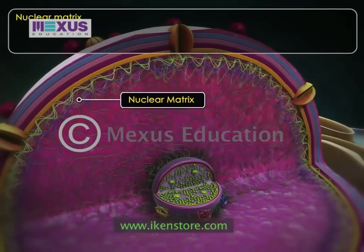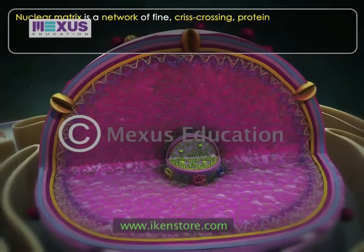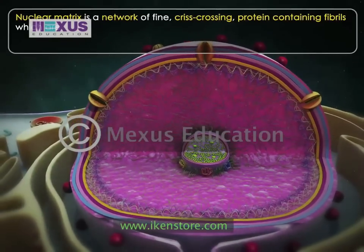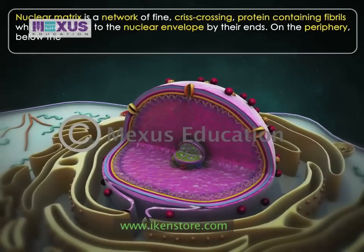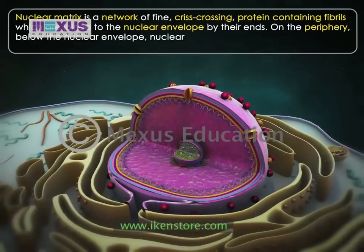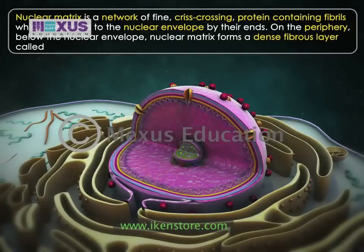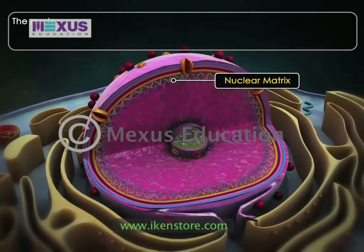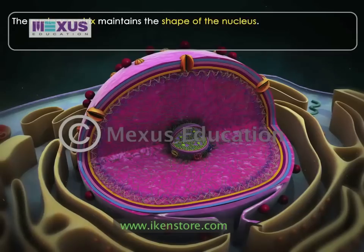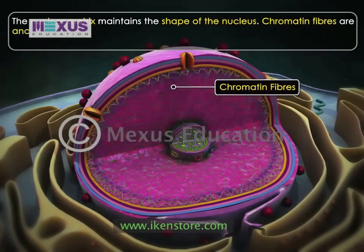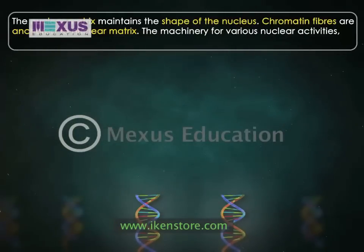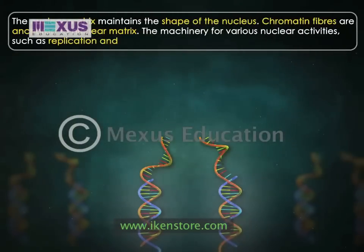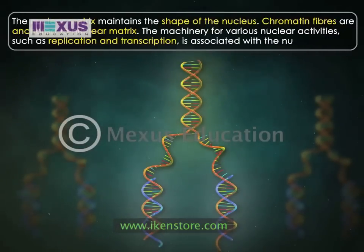The nuclear matrix is a network of fine crisscrossing protein-containing fibers which are joined to the nuclear envelope by their ends. On the periphery, below the nuclear envelope, the nuclear matrix forms a dense fibrous layer called the nuclear lamina. The nuclear matrix maintains the shape of the nucleus, and the chromatin fibers are anchored to it. The machinery for various nuclear activities such as replication and transcription is associated with the nuclear matrix.